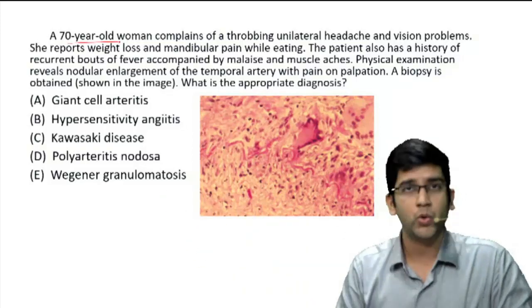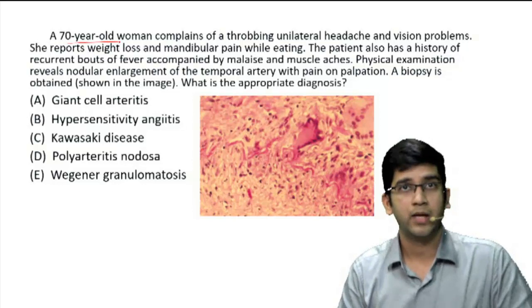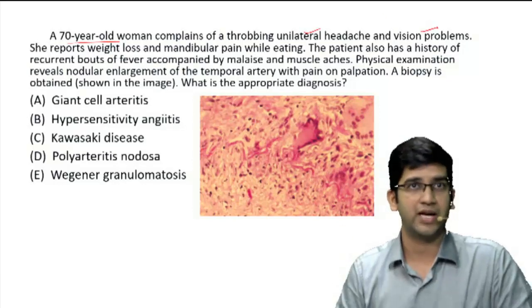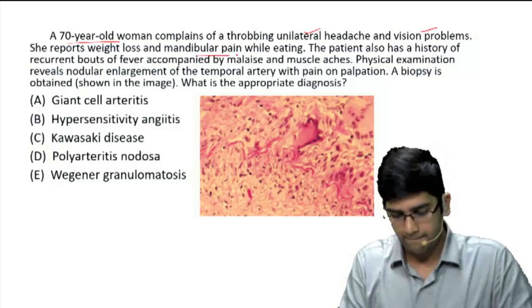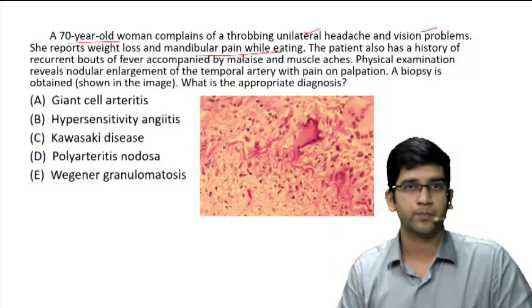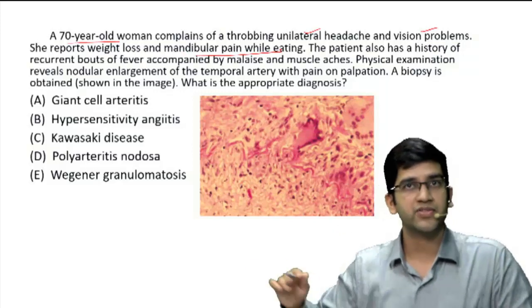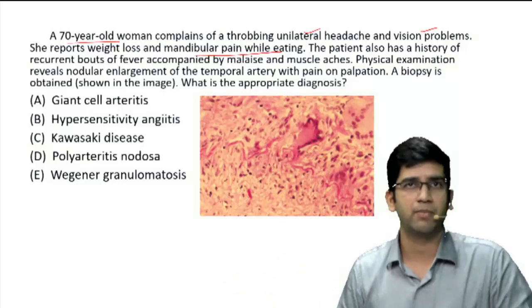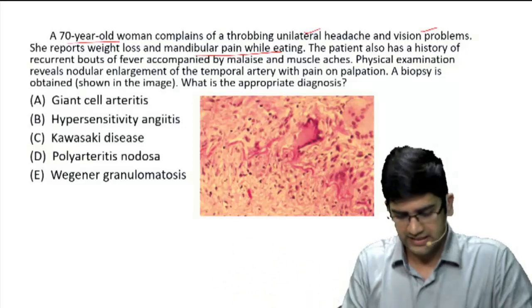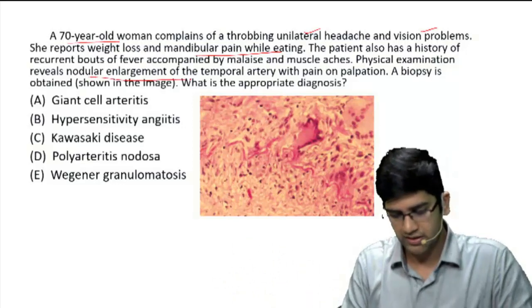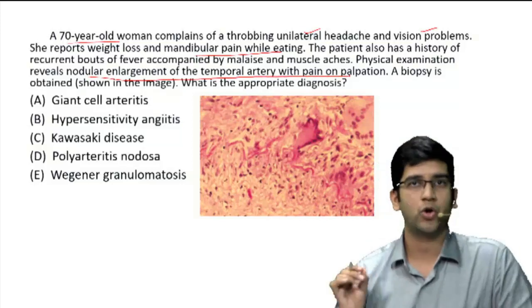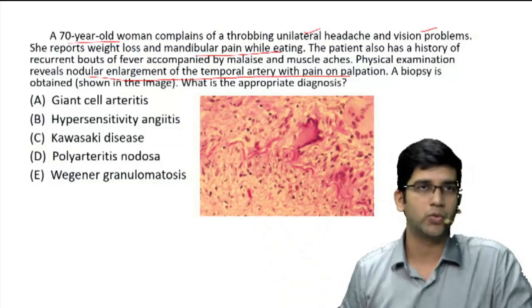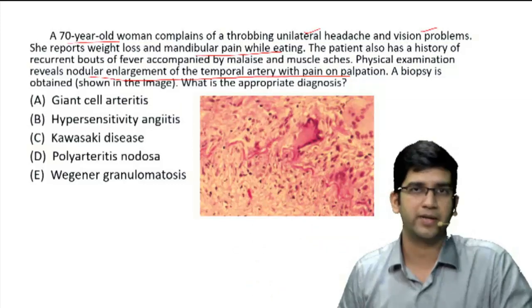A 70-year-old woman with a throbbing headache and visual problems — two findings — and also mandibular pain while eating. The person has a history of recurrent bouts of fever accompanied by malaise and muscle aches. Physical examination shows nodular enlargement in the temporal artery on palpation, and a biopsy from that is given below. What is your most appropriate diagnosis?